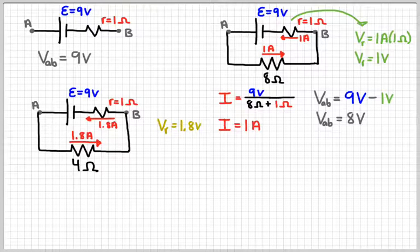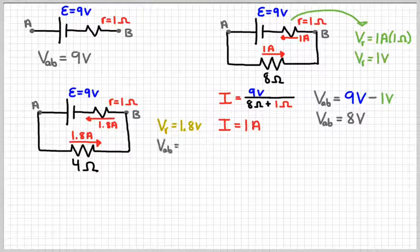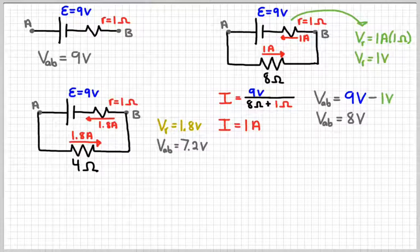Meaning that the voltage across the little resistor would be larger, since there's more charge moving through it, which means the terminal voltage of the battery would be smaller. So if we have 1.8 amps of current being drawn from this battery, then the voltage would be 7.2 volts.